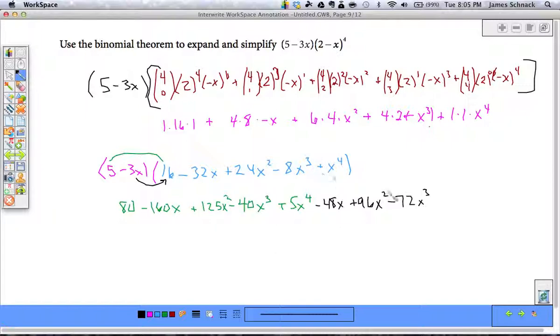Negative 3x times 24. That's going to be negative 72x cubed. Negative 3x times negative 8x cubed. That would be positive 24x to the fourth. And then negative 3x times positive x to the fourth would be negative 3x to the fifth.